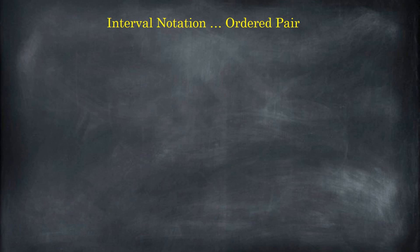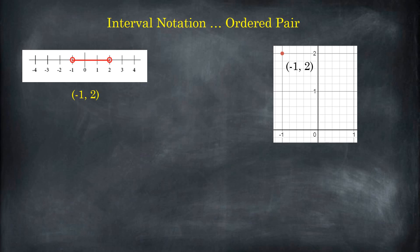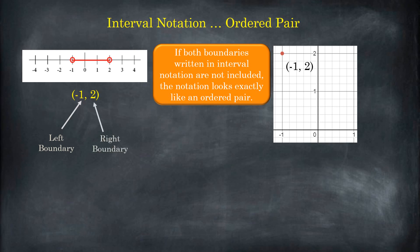Sometimes interval notation and ordered pairs get confusing. As an interval, this goes from negative 1 to 2, and because they have open circles, the values of negative 1 and 2 are not included — so it would be parenthesis negative 1, parenthesis 2. Well, that looks exactly like an ordered pair. When you have both boundaries of the interval not included, the notation looks exactly like an ordered pair. Here's the left boundary — not included; here's the right boundary — not included.